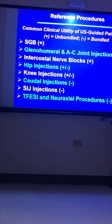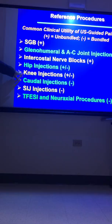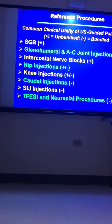Intercostal nerve blocks — unbundled. You get the bill for your procedure as well as for the use of imaging guidance. Hip injections — both again. Hip injections: you will be able to bill separately if you use fluoro, but not if you use ultrasound. Caudal epidural steroid injections — bundled. You don't get anything extra for using either ultrasound or fluoroscopy. Sacroiliac joint injections — bundled. Doesn't matter what you use; you only get paid for the injection. Transforaminal epidural steroid injections — bundled. Do not get paid for using imaging.